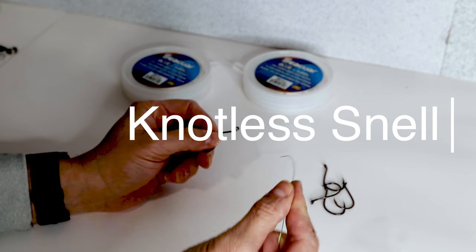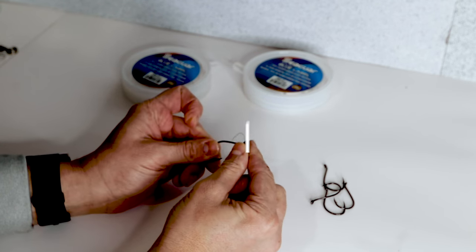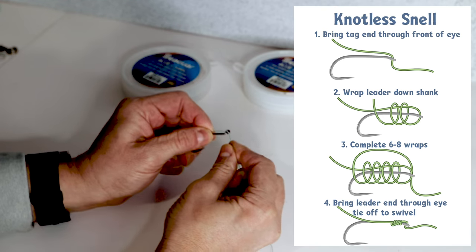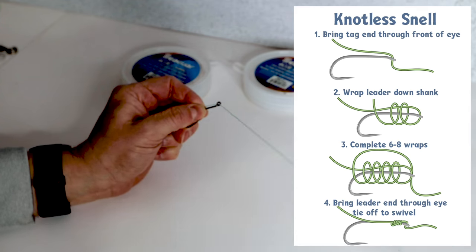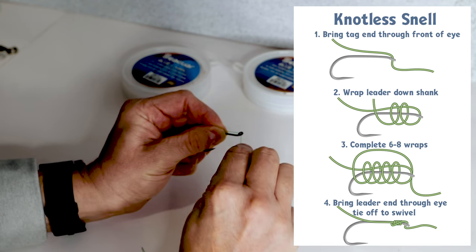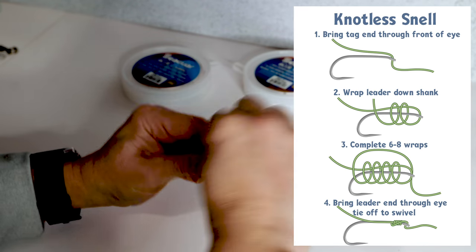Take your leader material, run it through the eye, you cinch this tag end off, and then with the loose end, you're going to wrap ten times downwards.